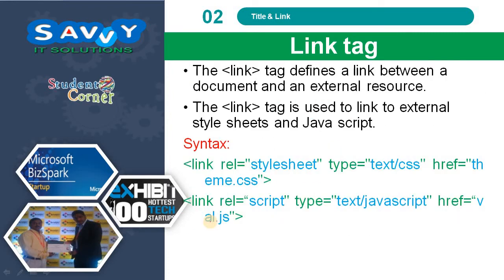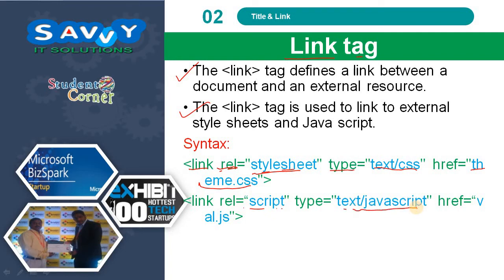The next one is the link tag. External stylesheets or external JavaScript files are imported into our HTML page with the help of the link tag. The link tag defines a link between a document and an external source. The syntax uses the link tag with rel="stylesheet", type="text/css", and the name of the CSS file. Similarly, for JavaScript, rel is changed to "script" and type to "text/javascript".